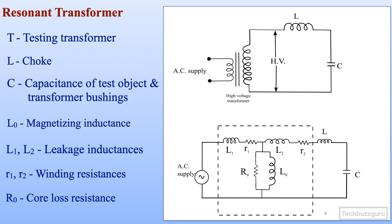At power frequency, the value of inductor L is adjusted so that the inductive reactance becomes equal to the capacitive reactance of the circuit at 50 Hz. In this condition, the current is limited only by the resistance of the transformer, which is a very small value. The current rises sharply, and this increase in current during the resonance condition induces a very large voltage across the test object, represented by the capacitor. This is the basic principle: resonance induces very high voltage across the output.